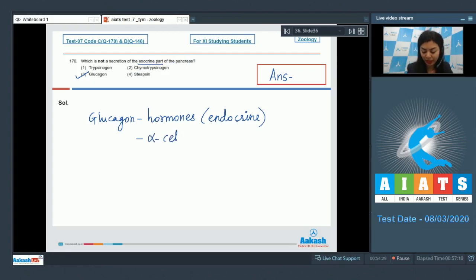Glucagon is secreted by alpha cells present in the islets of Langerhans, that is endocrine part of pancreas. While rest of the given secretions come from the exocrine part of the pancreas. Among the given options, glucagon is not an exocrine secretion, and hence is our answer. Answer is 3.